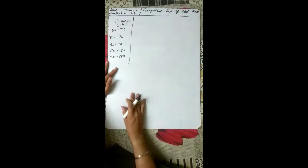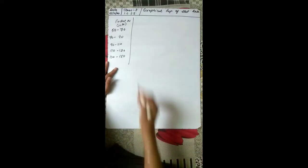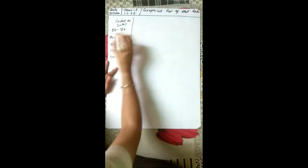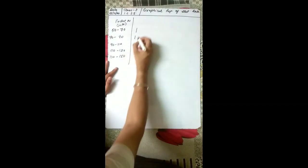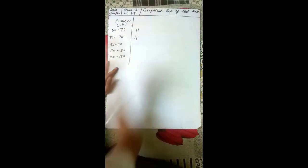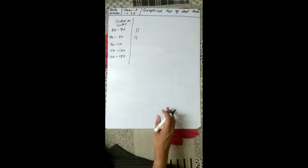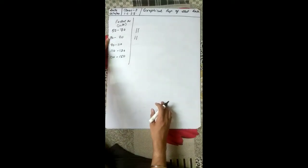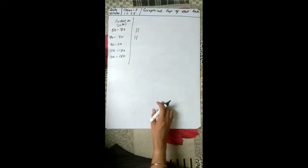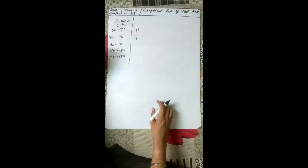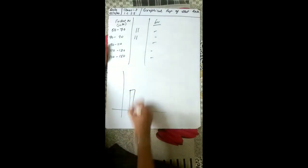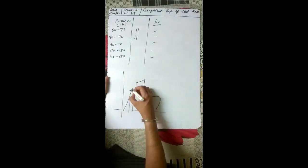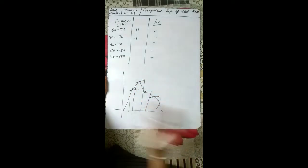The class intervals in rupees are: 50 to 70, 70 to 90, 90 to 110, 110 to 130, and 130 to 150. Seeing the data, you have to first make the tally marks. For example, 60 is the first value — 60 will lie between 50 to 70, so make one stroke there. Then 73 will lie in 70 to 90, then 80 in 70 to 90, then 65 in 50 to 70. Note that 70 goes in the 70 to 90 interval, not 50 to 70, and 110 goes in the 110 to 130 interval. After making the tally marks, count the frequency, then draw the histogram and start making the frequency polygon.